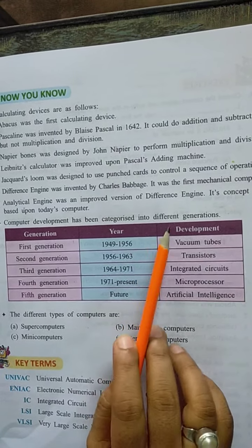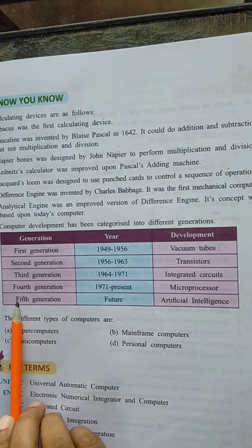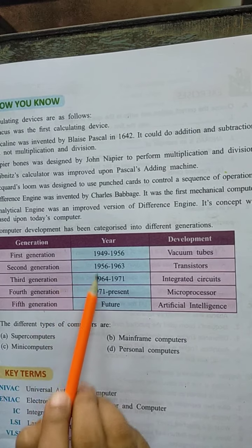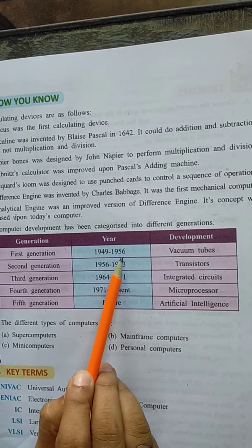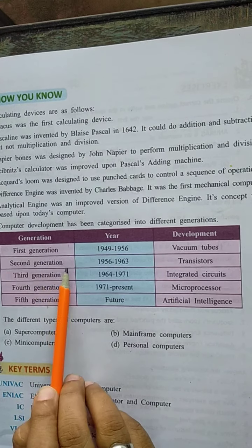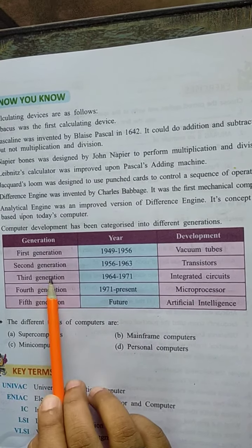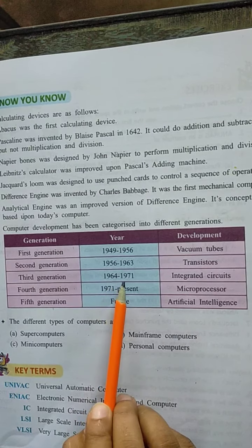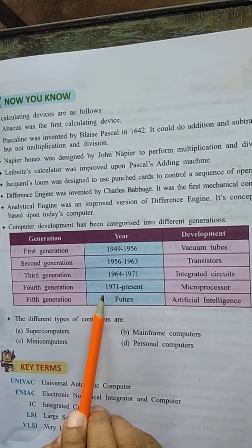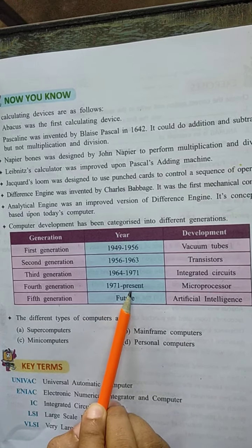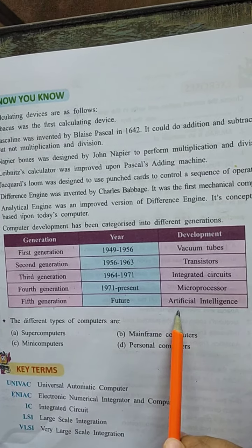Computer development has been categorized into different generations. There are 5 generations: 1st generation computer developed between 1949 to 1956, using vacuum tubes. 2nd generation computer developed between 1956 to 1963, using transistors. 3rd generation computer developed using integrated circuits. 4th generation computer developed from 1972 to the present, using microprocessors. 5th generation computer represents future generation computers using artificial intelligence.